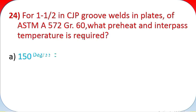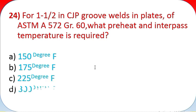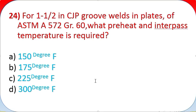Question 24: For 1.5 inch CJP groove welds in plates of ASTM A572 GR60, what preheat and interpass temperature is required? A - 150 degrees Fahrenheit, B - 175 degrees Fahrenheit, C - 225 degrees Fahrenheit, D - 300 degrees Fahrenheit.